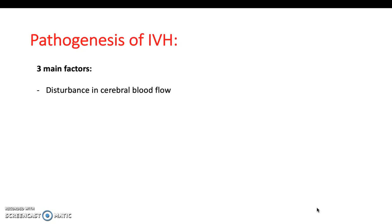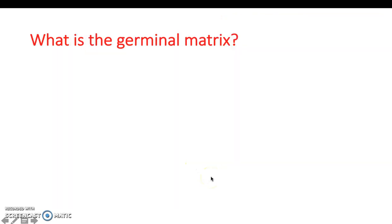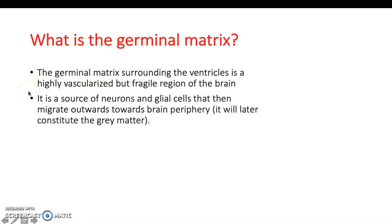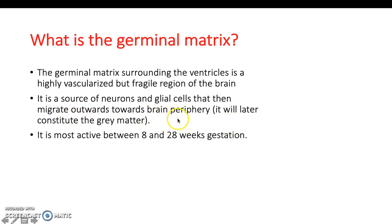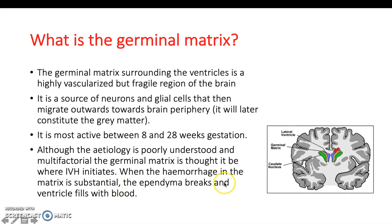Regarding pathogenesis, there are three main contributing factors: a disturbance in cerebral blood flow, fragility of the germinal matrix, and platelet and coagulation disorders. The germinal matrix is highly vascularised, increasing haemorrhage risk. In the developing brain it is the source of neurons and glial cells, which migrate outward, and is most active between 8 and 28 weeks. When haemorrhage in the matrix is substantial, the ependyma breaks and the ventricle fills with blood.